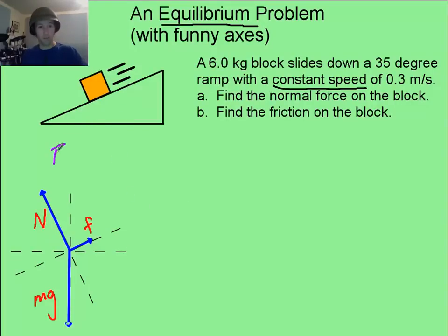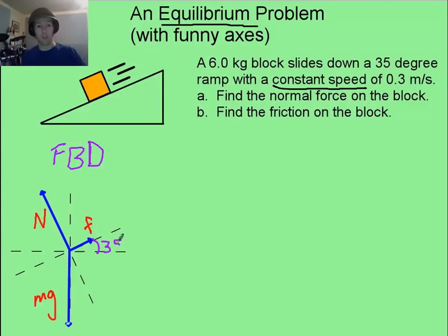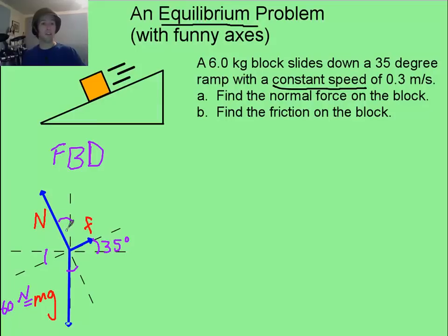Hopefully your free-body diagram has weight, friction, and normal force — with the normal force going perpendicular to the slope of the ramp. Now that ramp is 35 degrees, so all of these angles are going to be 35 degrees as well. Since it's a six-kilogram block, we're going to have a 60-Newton weight force. The interesting thing is that we only have one force on each of our traditional x and y axes, and these are at funny angles, which is a problem.